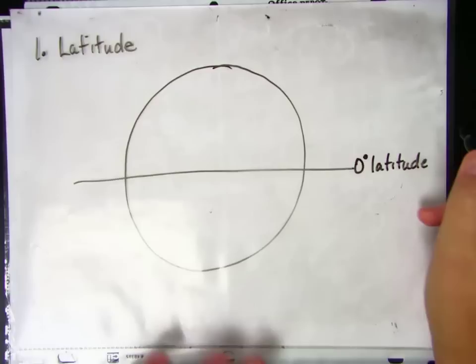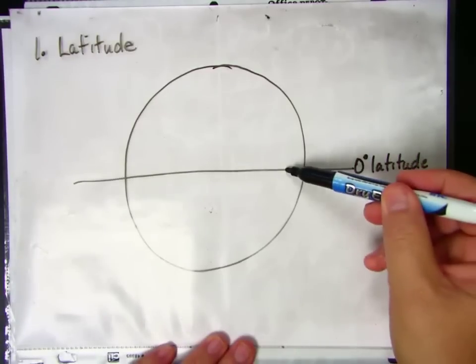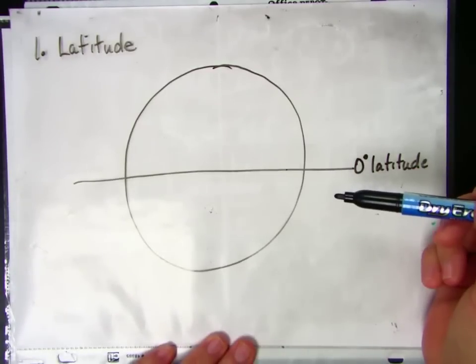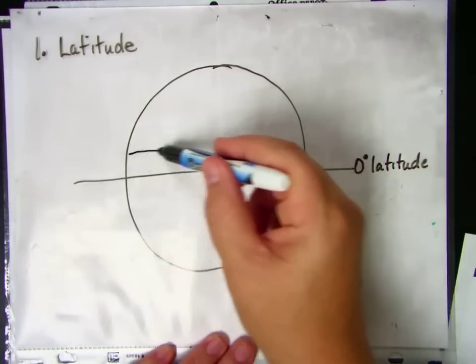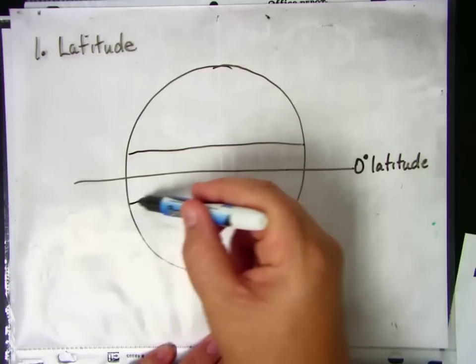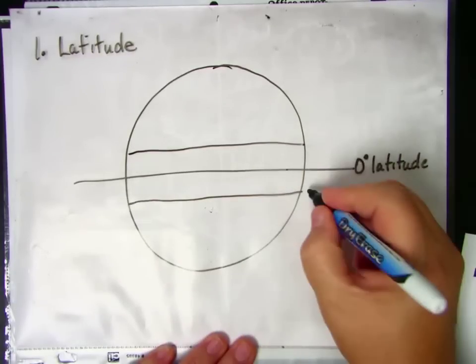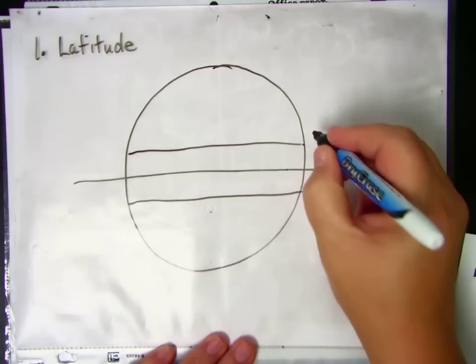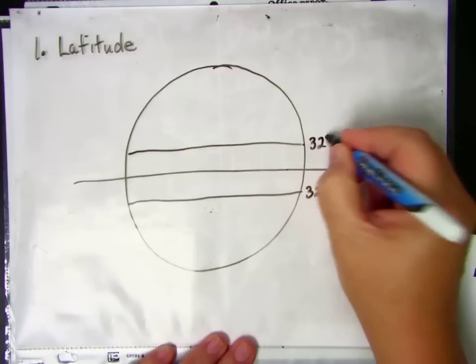So if you are on the Earth and you are at zero degrees latitude, that is the equator. And that's the warmest place on Earth because the sun shines directly upon the equator. The area surrounding the equator, from zero to about 32 degrees latitude, is called the tropical zone.